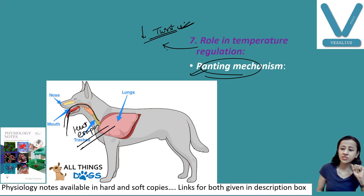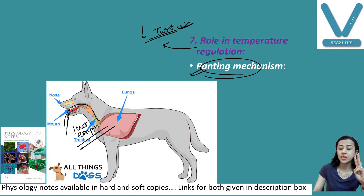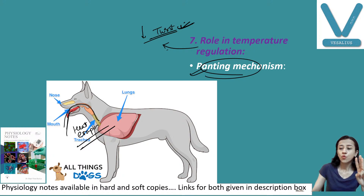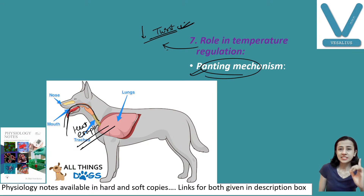So this is the seventh function. To repeat all functions: first is protective function; second is mastication and deglutition; third is digestive function; fourth is role in taste sensation; fifth is speech; sixth is excretory function; seventh is temperature regulation.